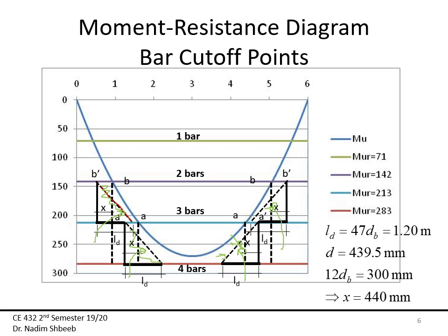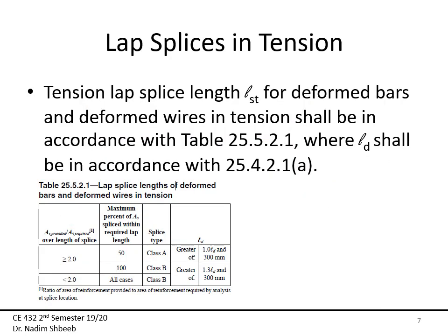Using a smaller bar diameter gives a smaller development length, which moves the resistance diagram line outward and allows the moment diagram to fit within it. This is essentially how we draw a moment resistance diagram — applicable to simple or continuous beams — giving a graphical alternative to calculating Mn/Vu + La each time.